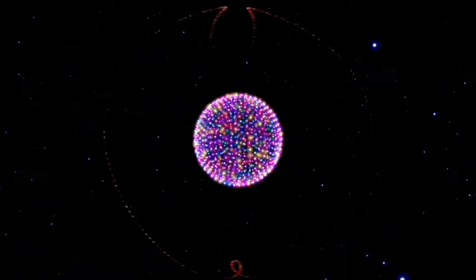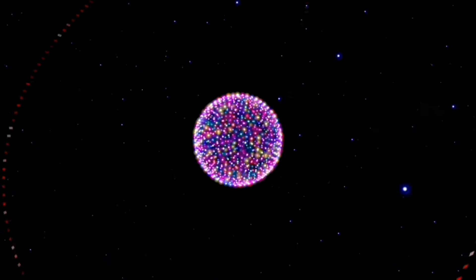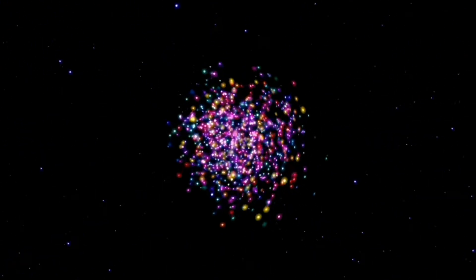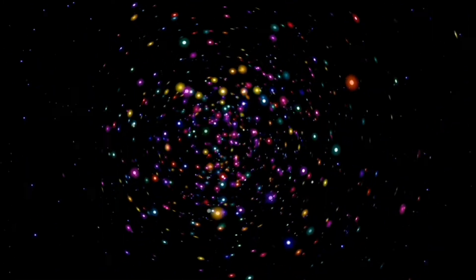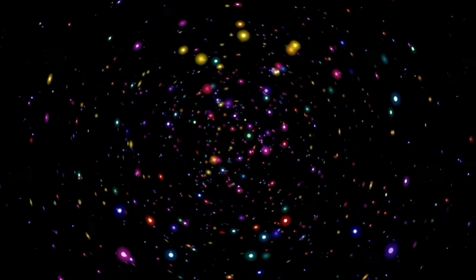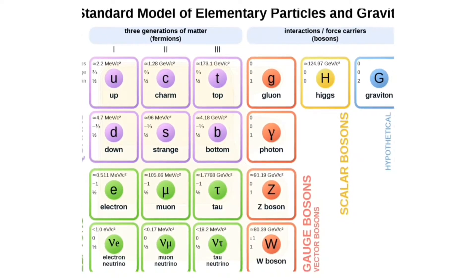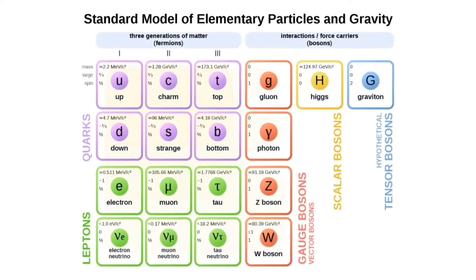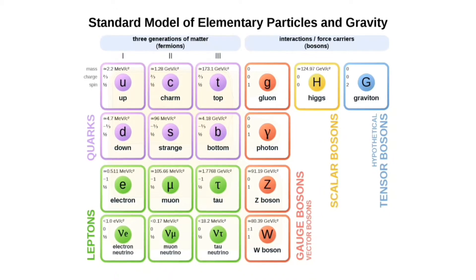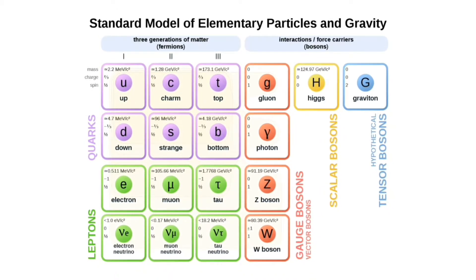Elementary particles like quarks and electrons are the foundation upon which all matter in the universe is built. The Standard Model of particle physics is currently the best theory to describe the most basic building blocks of the universe. It explains how particles called quarks, which make up protons and neutrons, and leptons, which include electrons, make up all known matter.